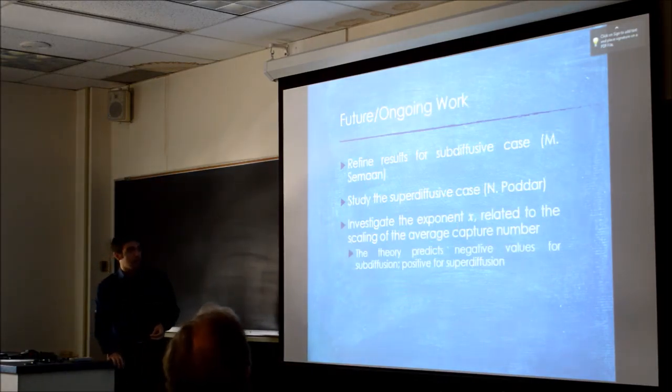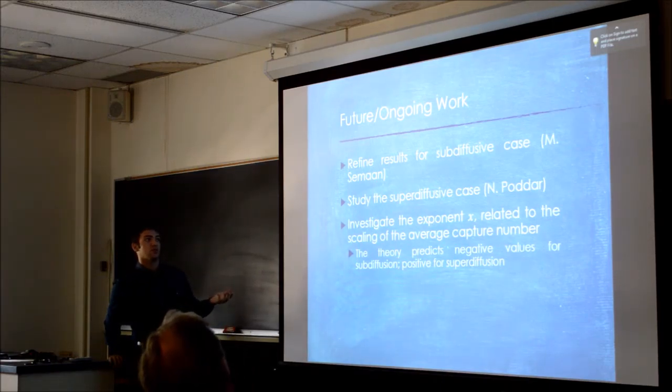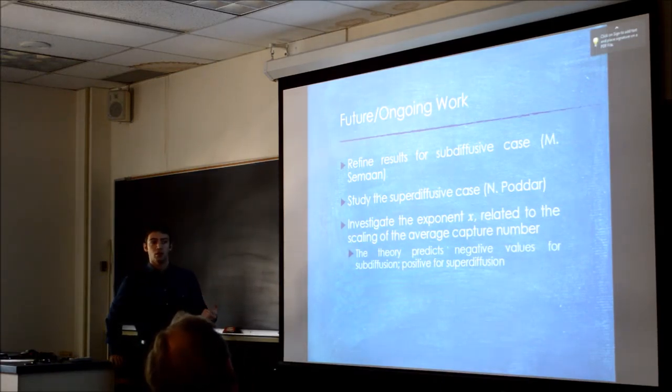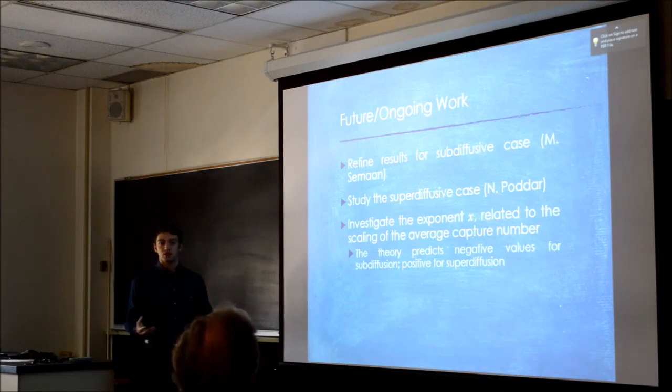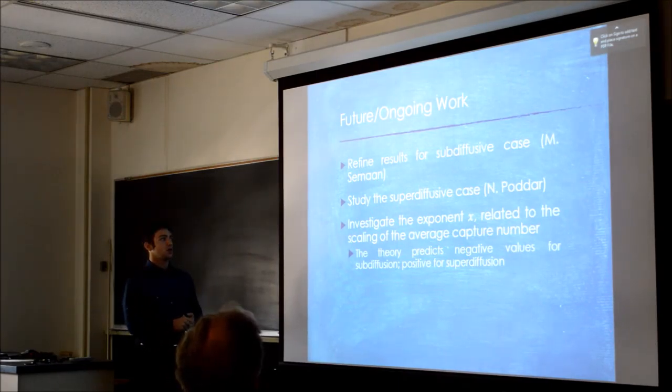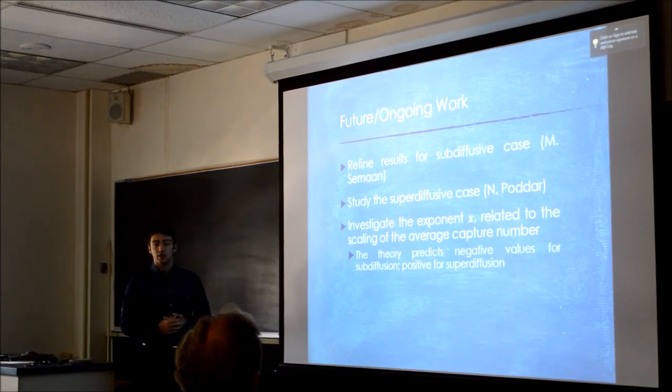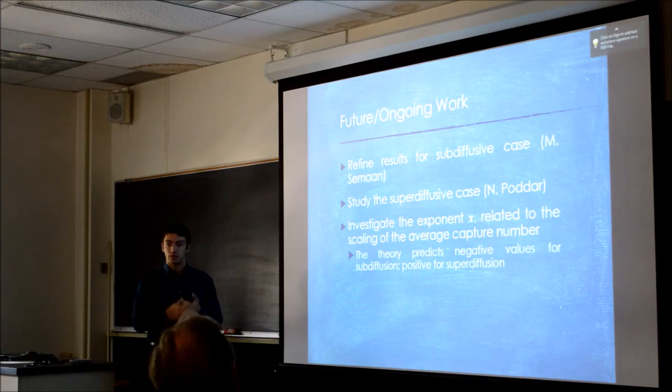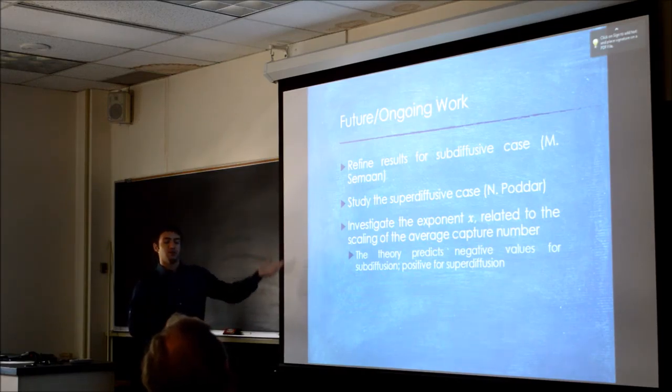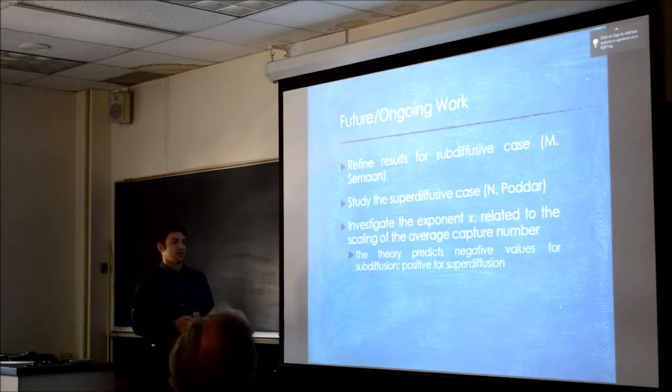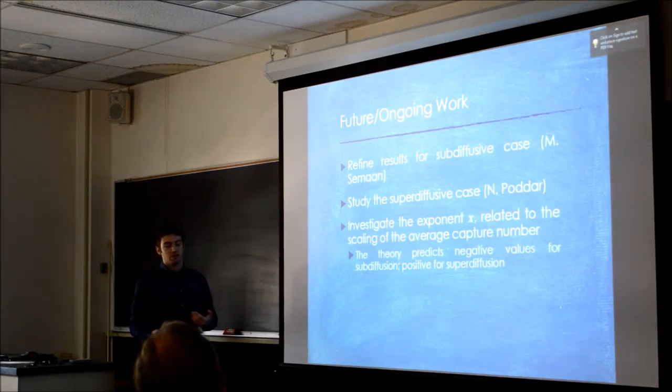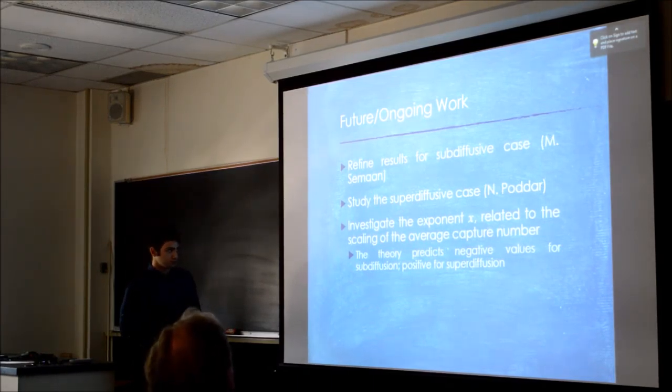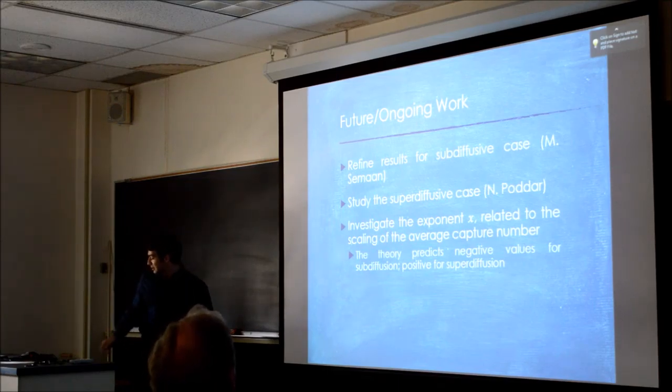So future and ongoing work are to kind of get even better statistics for the sub-diffusive case. That's something I'll be working on. Going to larger system sizes, making sure we really kill the statistics on this stuff. Also study the super-diffusive case and do a lot of simulations for that. The graduate student, Natun Padar, who works with me and Dr. Amar, is working on that. And also looking at this different exponent x, not chi, which is related to the scaling of the average capture number. This is just another variable we can look at to distinguish between these two things.